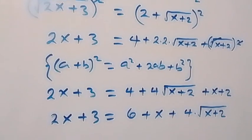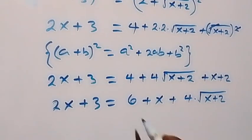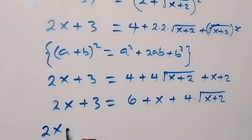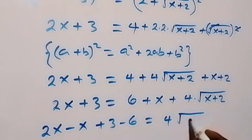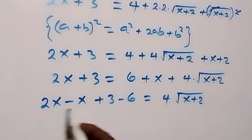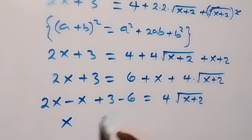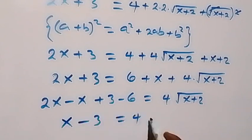Now let's take 6 and x to the left side. We have 2x minus x, then plus 3 minus 6, now equals to 4 times square root of x plus 2. That is: x minus 3 equals 4 times square root of x plus 2.